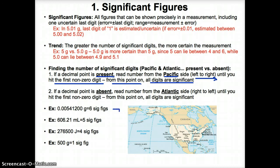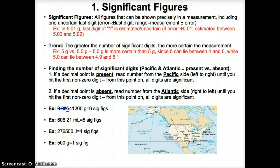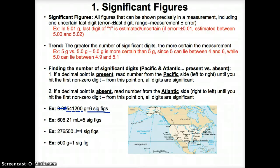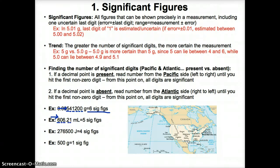Let's try two examples. In the first example, we have a decimal point, so we read the number from the Pacific side until we hit the first non-zero digit. We hit our first non-zero digit at 5. From 5 onward, all digits are considered significant, giving us a total of 6 sig figs. Same idea in the second example: we have a decimal point present, so we read left to right until we hit the first non-zero digit at 6. From this point on, all digits are significant — so we have 5 sig figs.